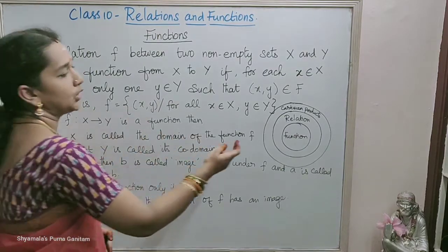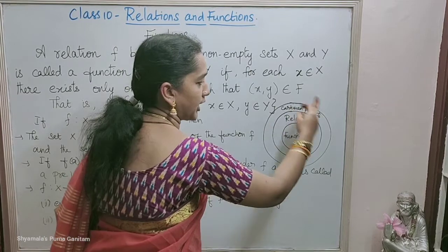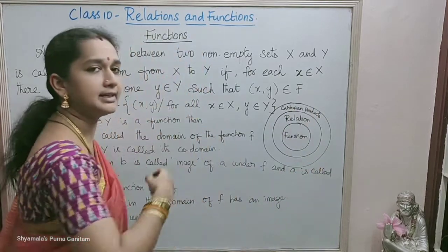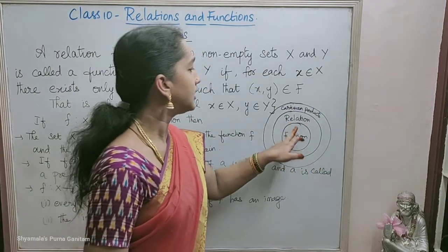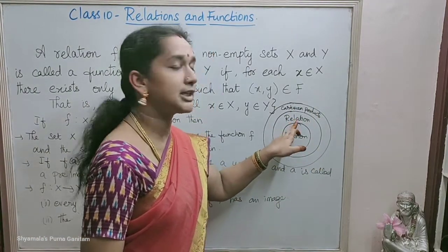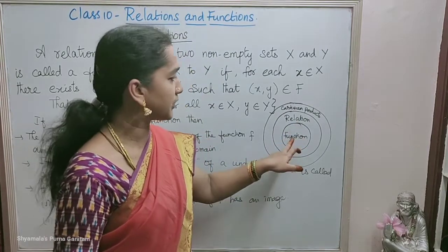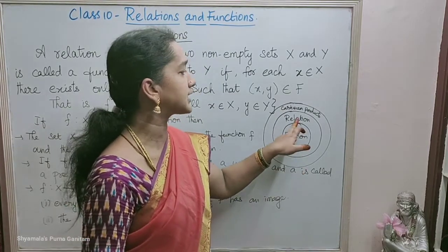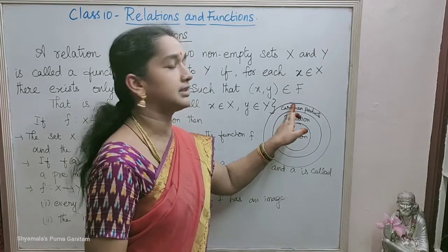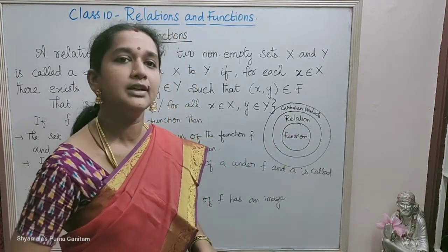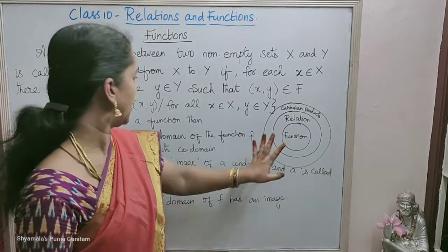Function, relation, and Cartesian products are related like concentric circles. Function is a subset of relation, and relation is a subset of the Cartesian product.